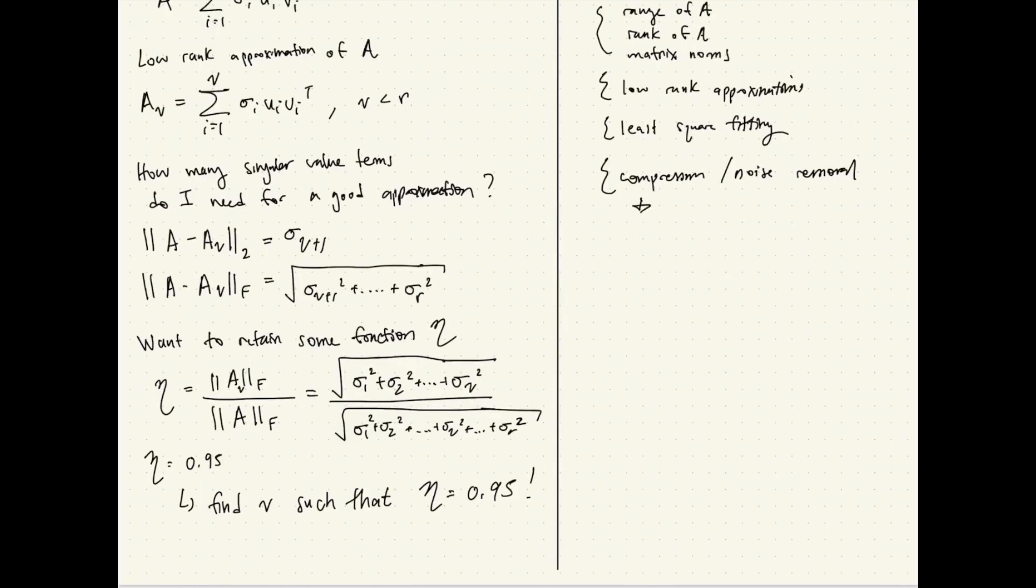So for compression, we keep only, let's say, only the important terms. And by important, we mean the terms corresponding to the higher-valued singular values, because we don't care after that.